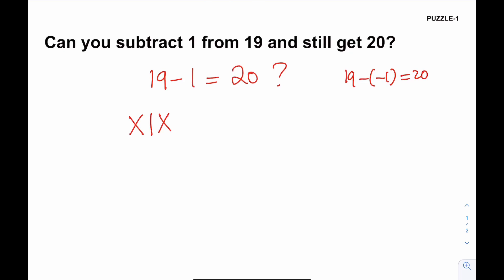Well, what is 1 in Roman numerals? It's this one, right? I is a 1. So if you take out 1 from 19, what do you get? You get 20. That's the solution to our puzzle.